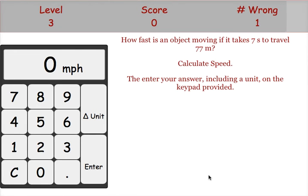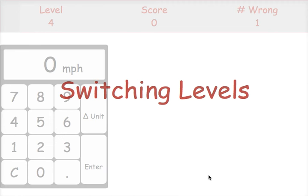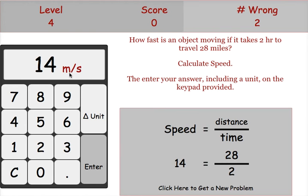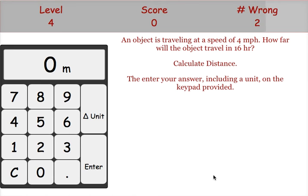When you're ready to move on, click on that box and you'll be presented with a new question. If you get an answer right but the unit wrong, it will show you in red that you got the unit wrong. Again, click here to move on to a new question.